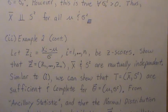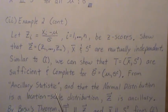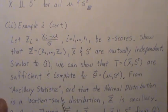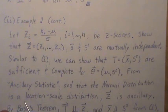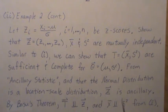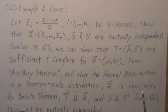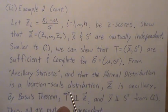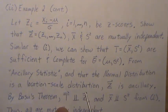Now from ancillary statistics, in quotes, because that's the video name, and that the normal distribution is a location scale distribution, which we cover in here, Z is ancillary. So by Basu's theorem, this complete sufficient statistic is independent of this ancillary statistic.